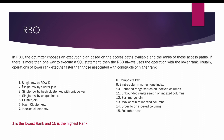For example, the access path 'single row by row id' — which is accessing a specific row using an index — has a rank of 1. 'Single row by cluster join' access path has a rank of 2, and so on. The last access path is the full table scan, which has a rank of 15. When there is more than one way to execute a SQL statement, RBO always uses the operation with the lower rank.